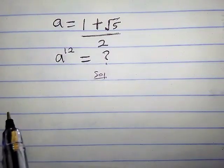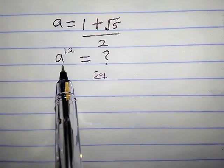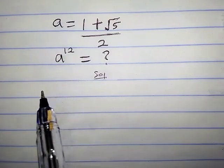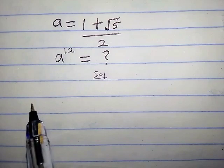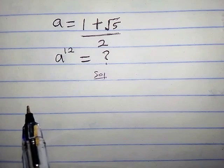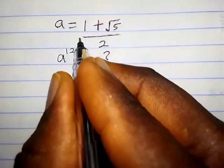a equals one plus square root of five over two. What is a raised to the 12? How do we solve this golden ratio problem?